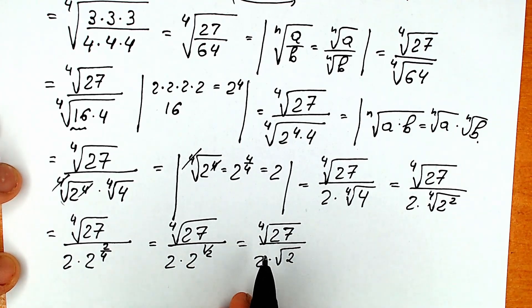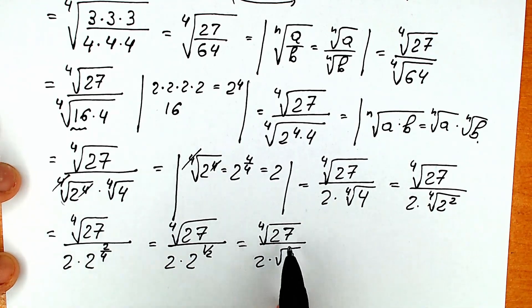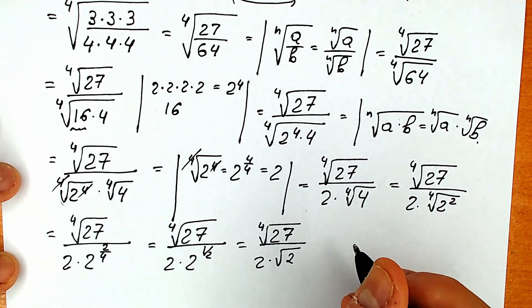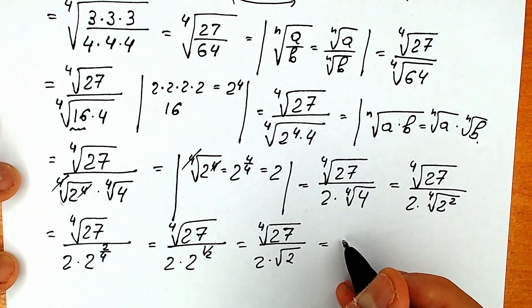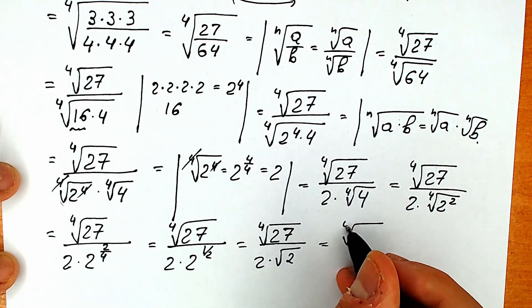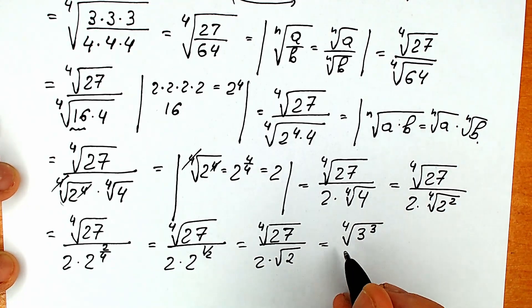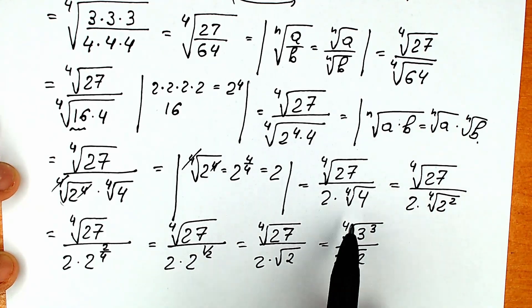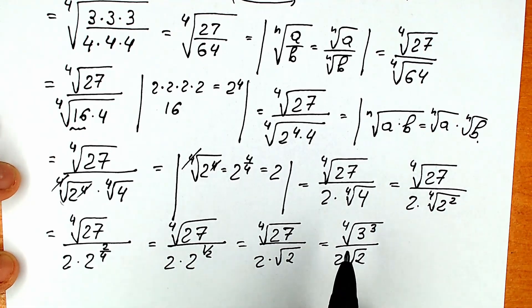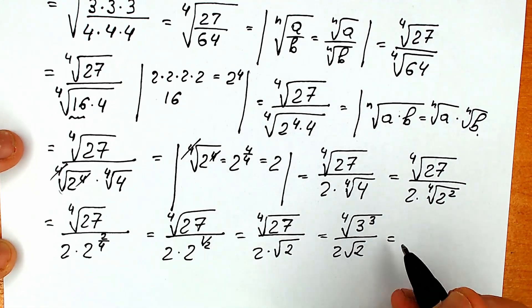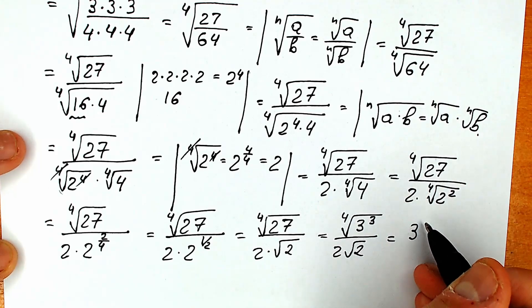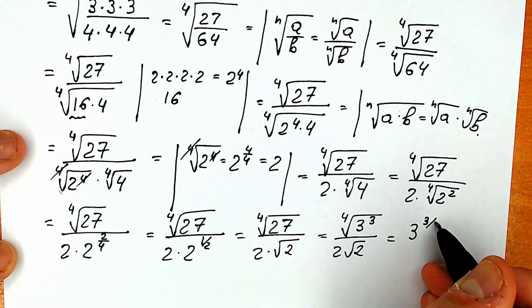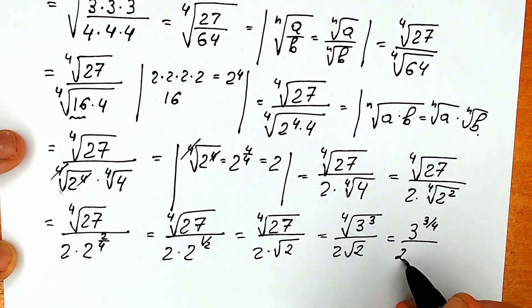We can also simplify the numerator. We can write 27 as 3 cubed, so the fourth root of 27 is the fourth root of 3 cubed, which equals 3 to the power three-fourths. So our expression is 3 to the power three-fourths over 2 times the square root of 2. This looks like our answer.